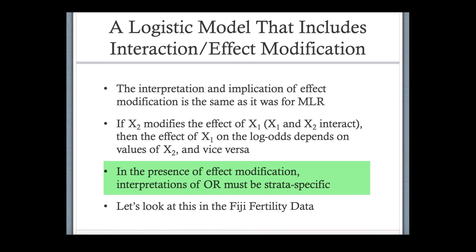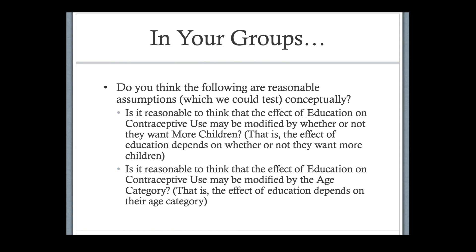If there is effect modification, the odds ratio must be specific to values of that x2 variable. Let's look at the Fiji fertility data. Our x1 variable of interest is level of education, our outcome is whether or not they're using contraceptives, and we can hypothesize that the variable 'wanting more children' — yes or no — may modify the effect of education.